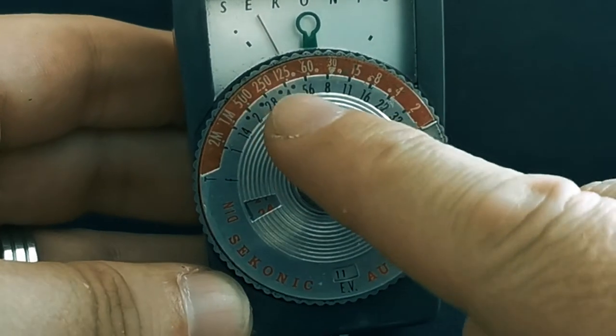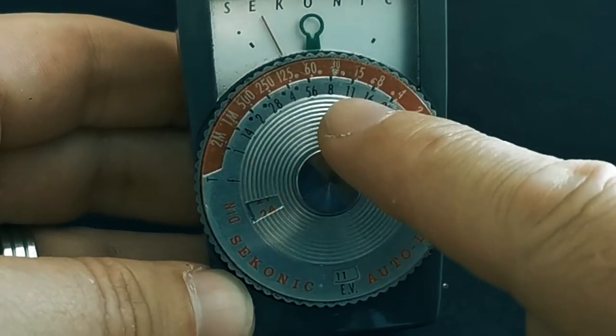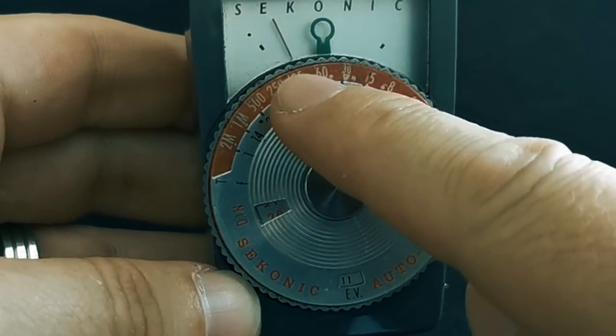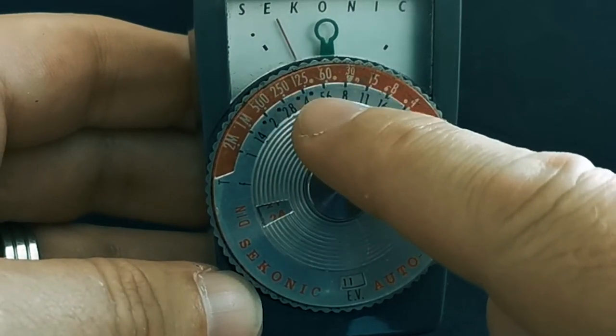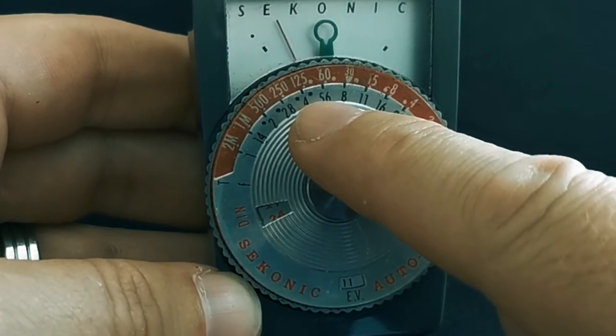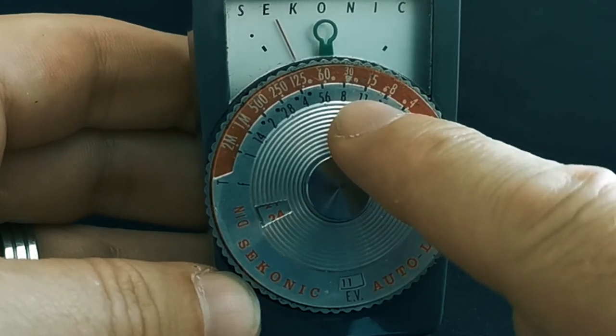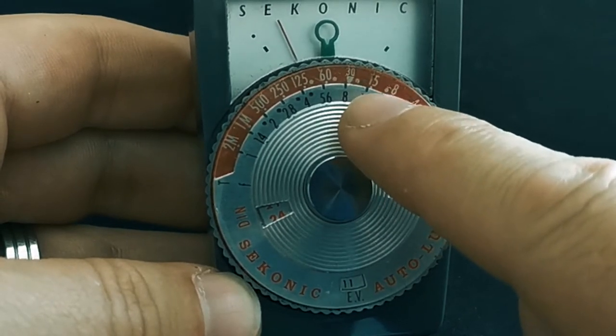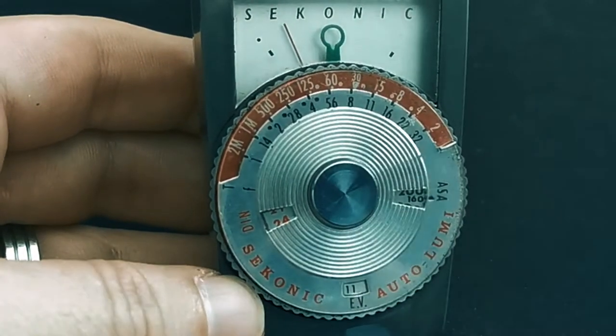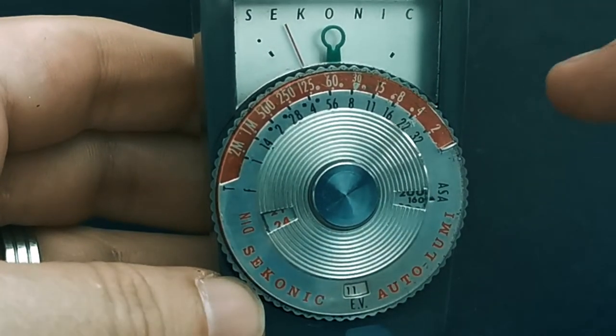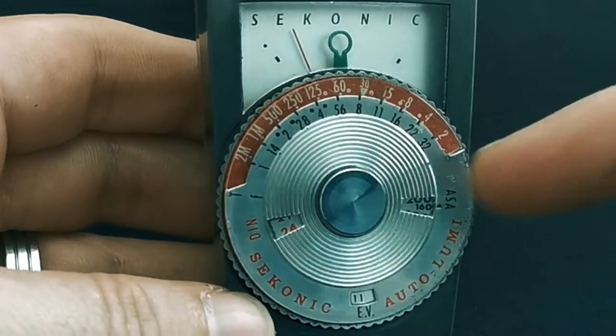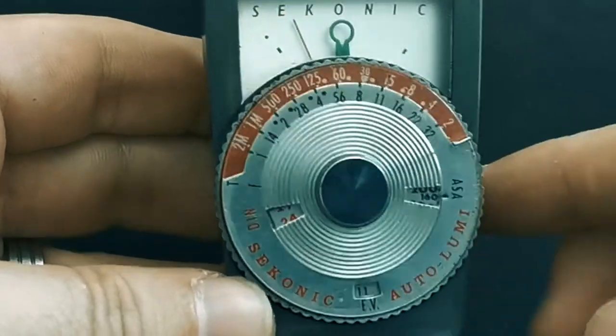I'll zoom this in for you when I edit the film, but what you're looking at now, for instance, if I was talking about 125th of a second, I'd be looking at f4 as my aperture. Likewise, if I was looking to use f11, then I would be looking at about a 15th of a second. So it's a case of obviously balancing out, a bit like on a modern camera where you could have aperture priority or shutter priority. This is the way around that you would look at these.